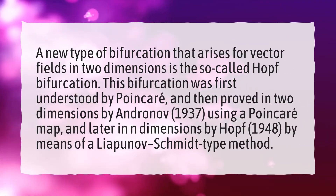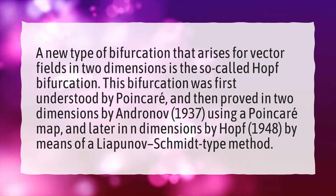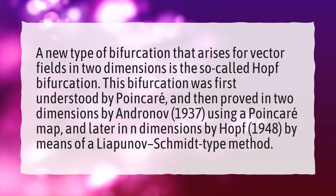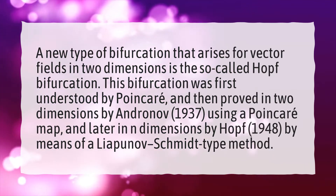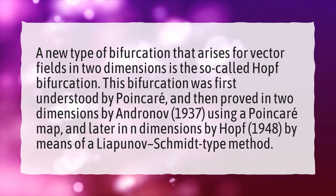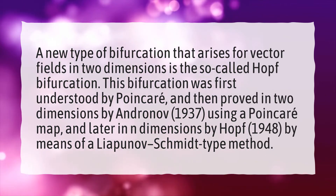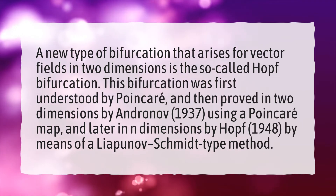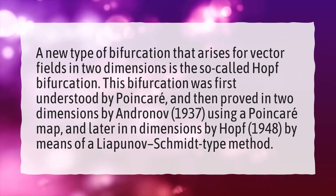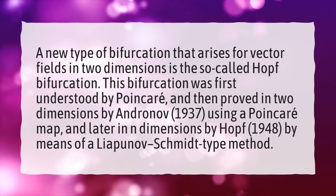A new type of bifurcation that arises for vector fields in two dimensions is the so-called Hopf bifurcation. This bifurcation was first understood by Poincaré, and then proved in two dimensions by Andronov in 1937, using a Poincaré map, and later in n dimensions by Hopf in 1948, by means of a Lyapunov-Schmidt-type method.